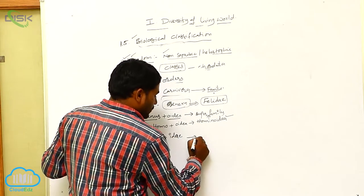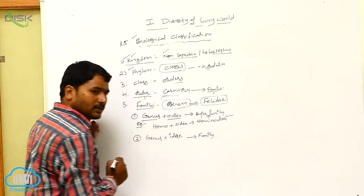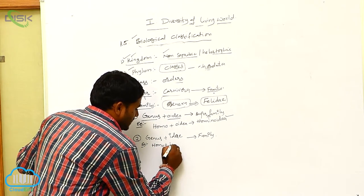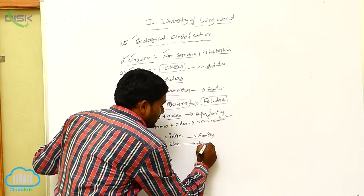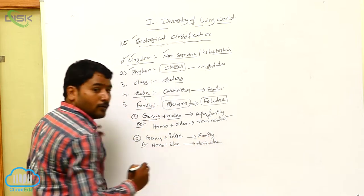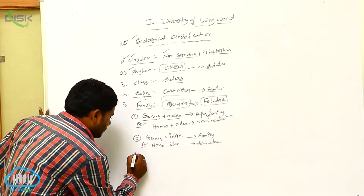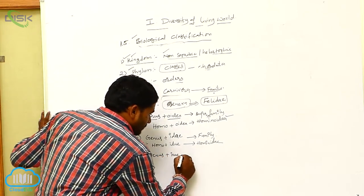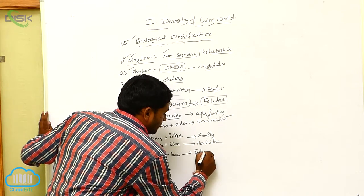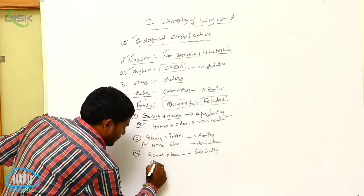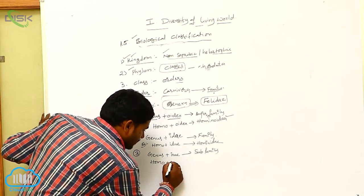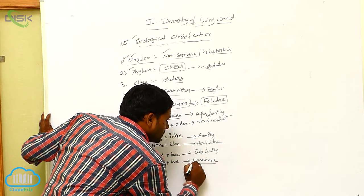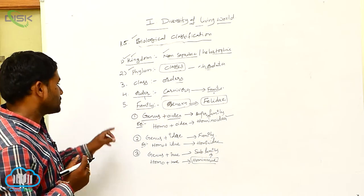Genus plus -idae will give you the family name. For example, Homo plus -idae gives you Hominidae, which is the family of man. And if you want to know the sub-family, genus plus -inae gives you the sub-family. For example, Homo plus -inae becomes Hominine, which is the sub-family of man.